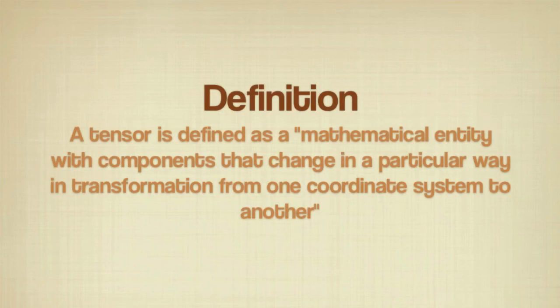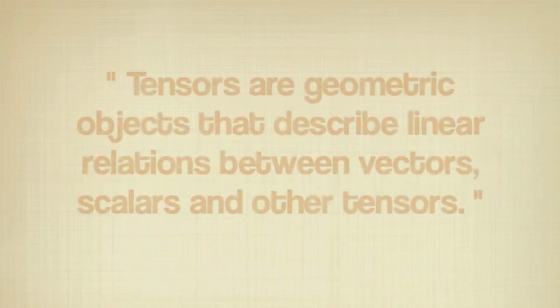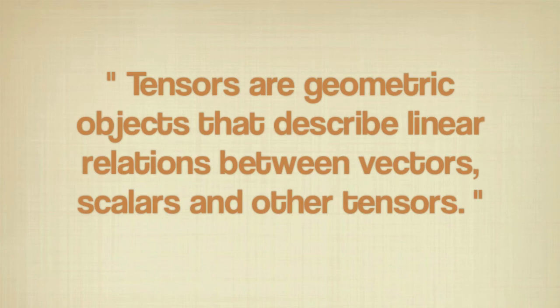A tensor is defined as a mathematical entity with components that change in a particular way in transformation from one coordinate system to another. It can be seen as a table of numbers or algebraic symbols used in tensor calculus. Tensors are geometric objects that describe linear relations between vectors, scalars, and other tensors.